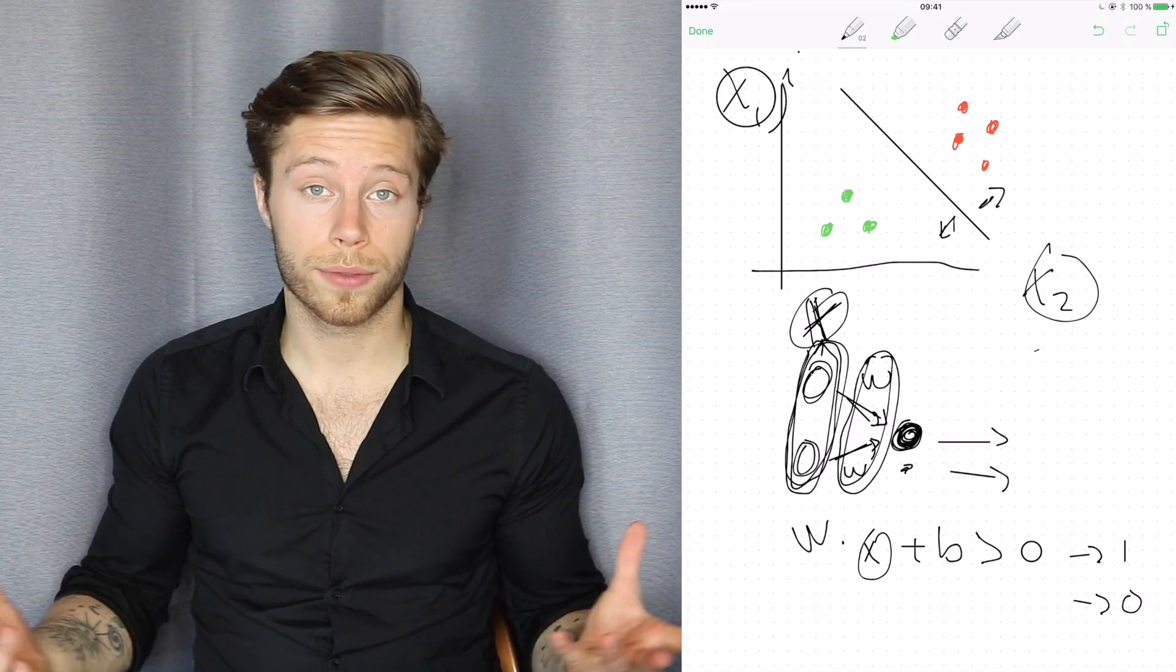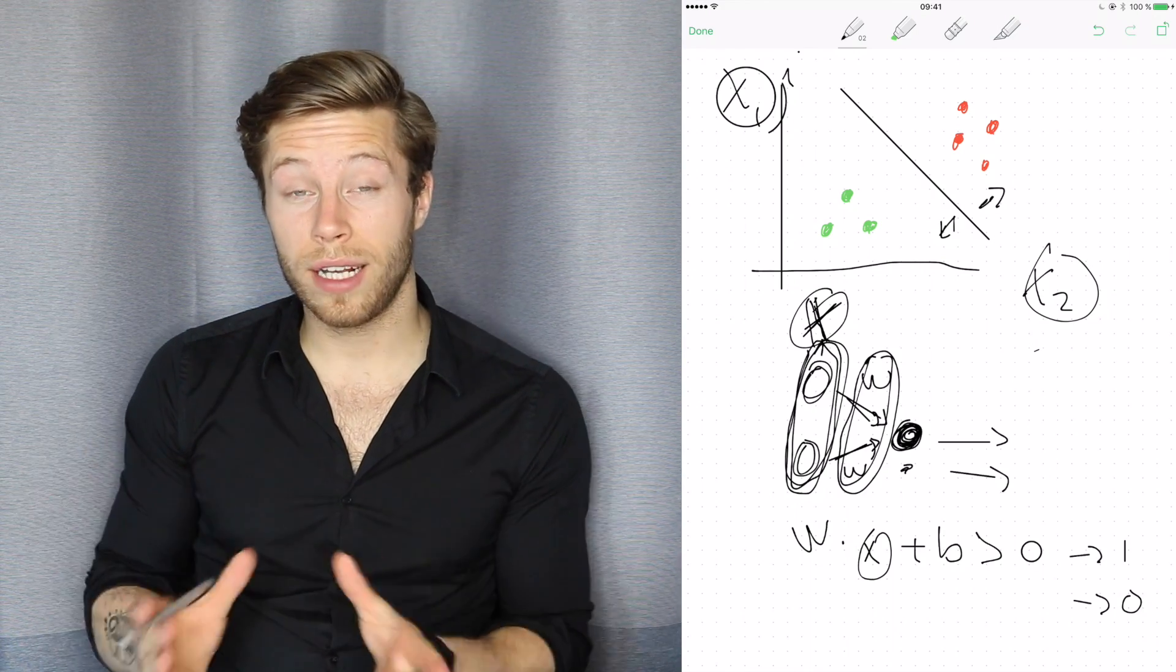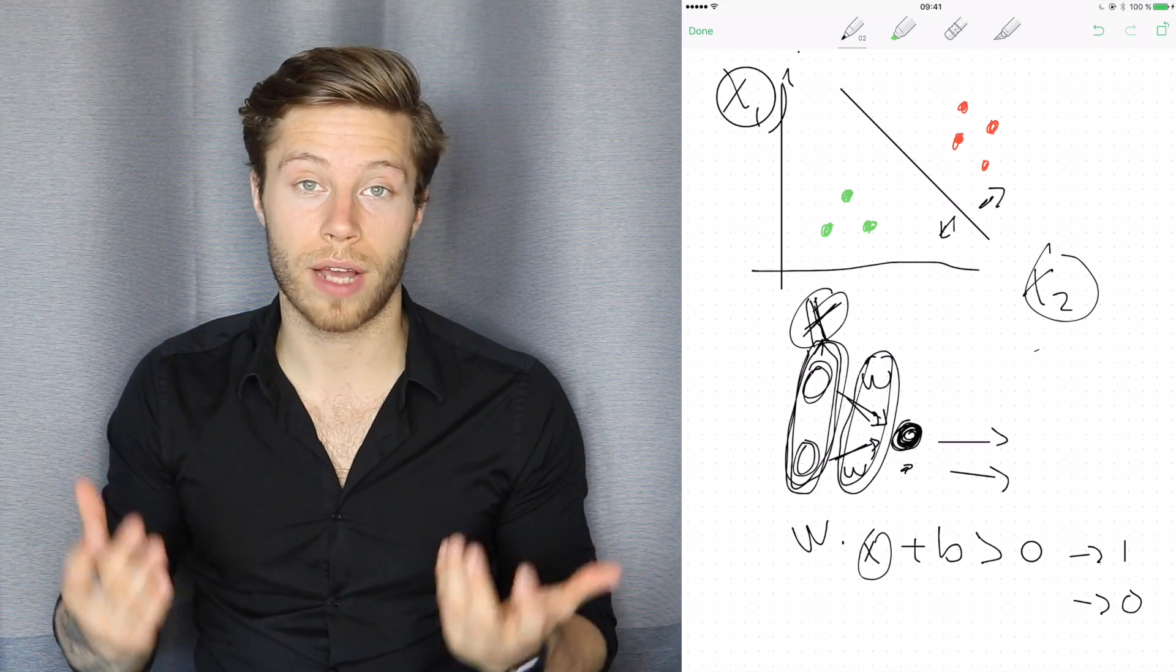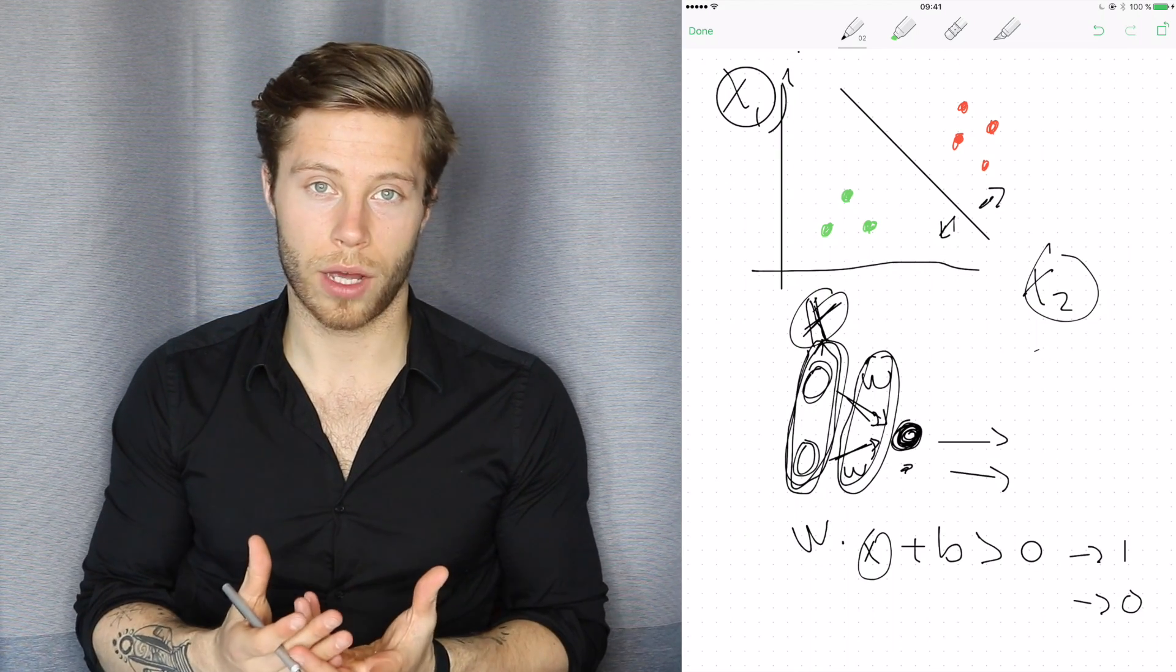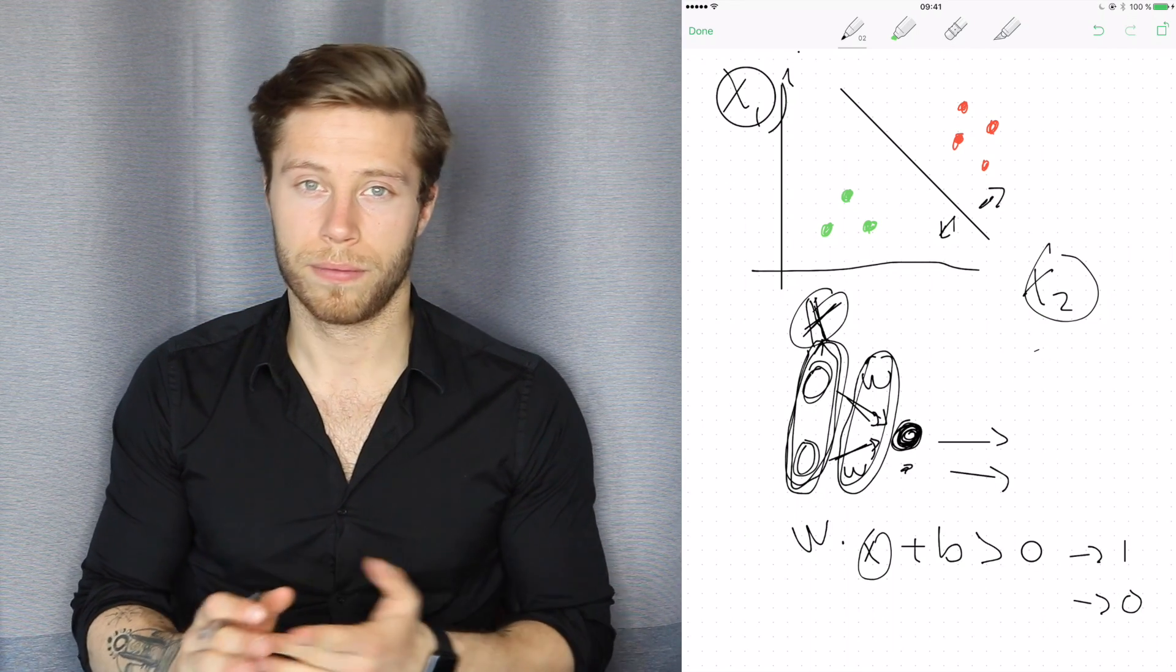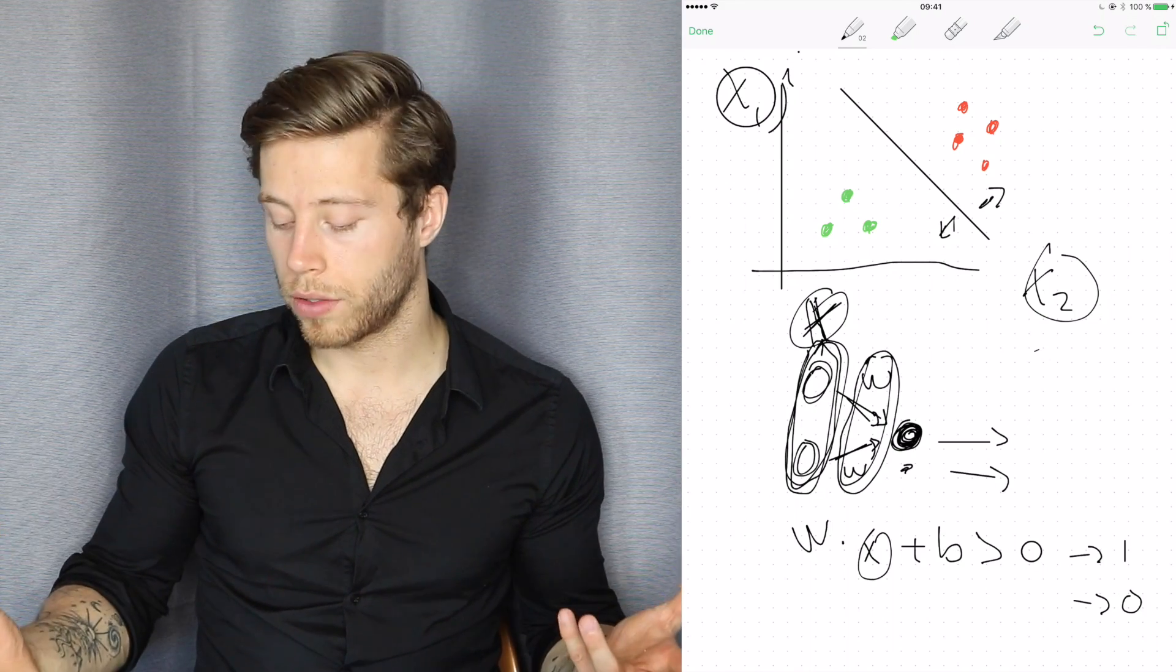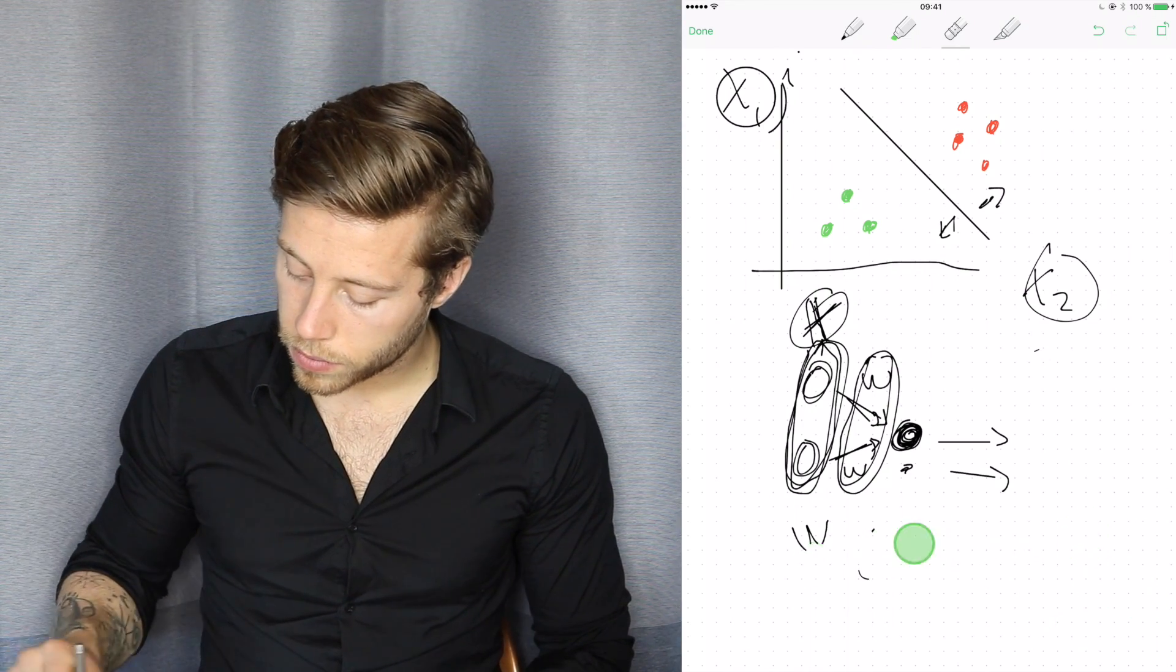But running this the first time will probably be really wrong about where the line should be. Because we initialize our weights with a random set of values first. So we don't make any pre-assumptions about how large the weight should be. We just take a random number, usually between minus one and one, and we say, well, these are the weights for the input values. We'll see how that works. But then the training goes on. So how does the training work? I'm going to remove this.